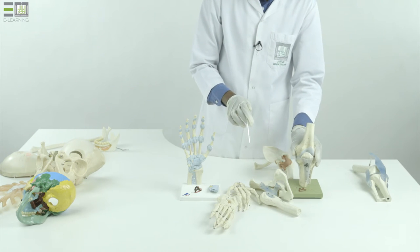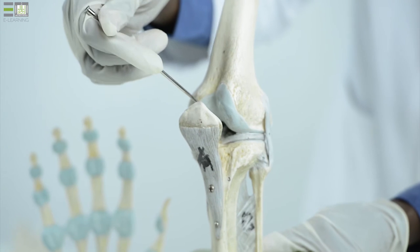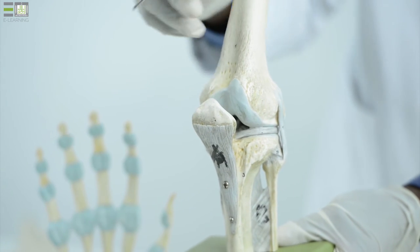The second type is hinge joint. Hinge joint is represented by the knee and elbow joint.